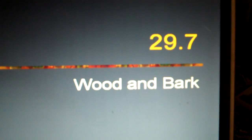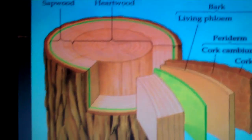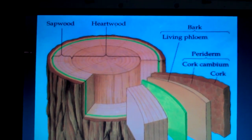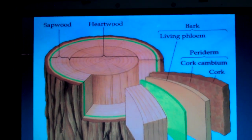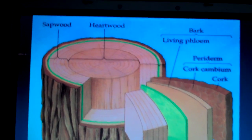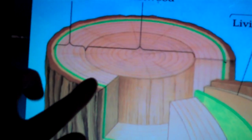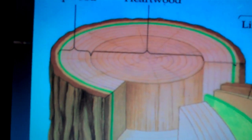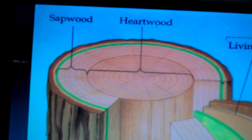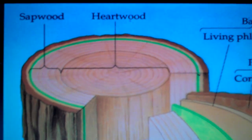Wood and Bark. Here we have an internal structure of a woody plant or a tree. The vascular cambium, shown here in green, is responsible for adding secondary xylem and secondary phloem.